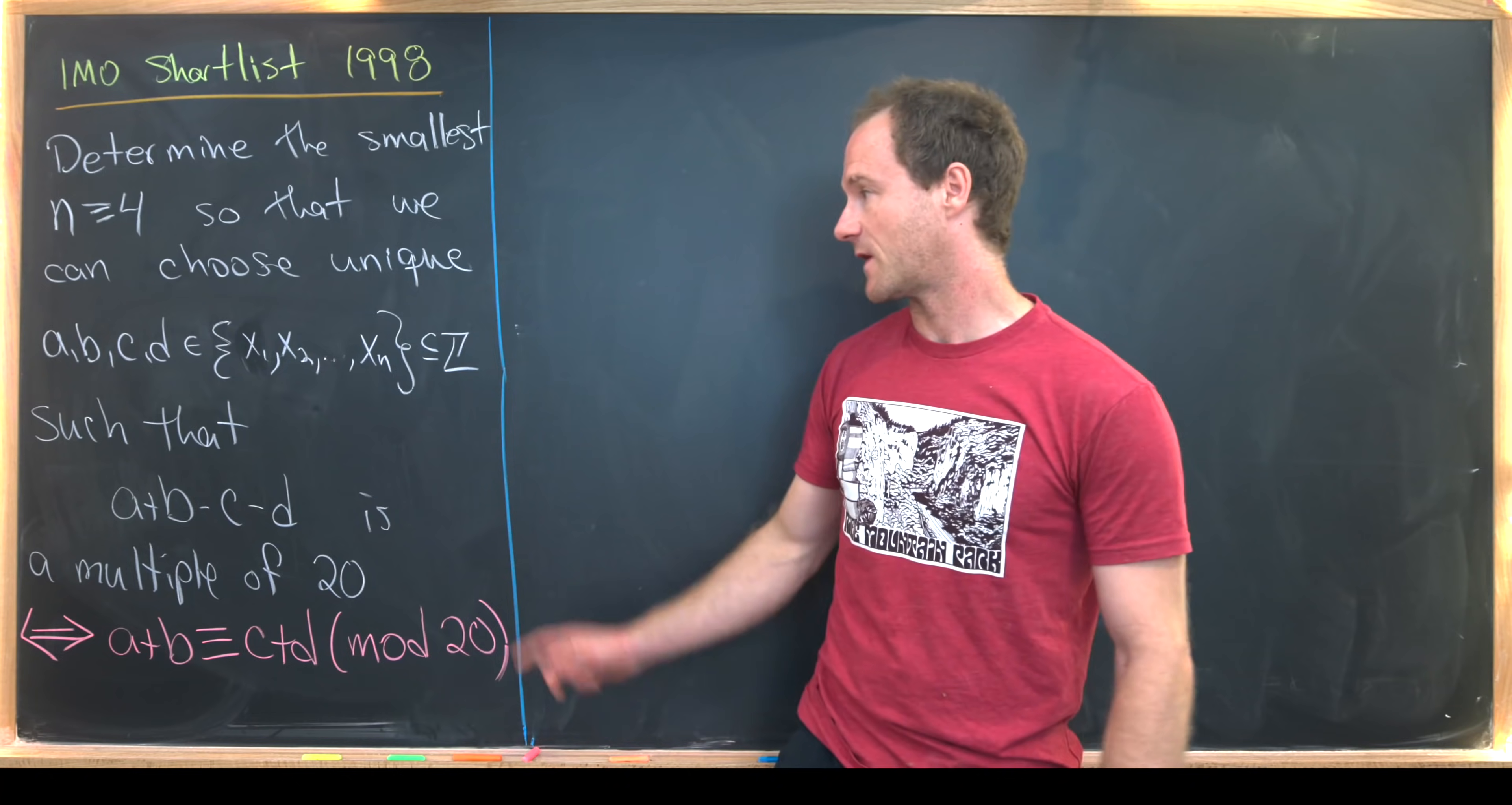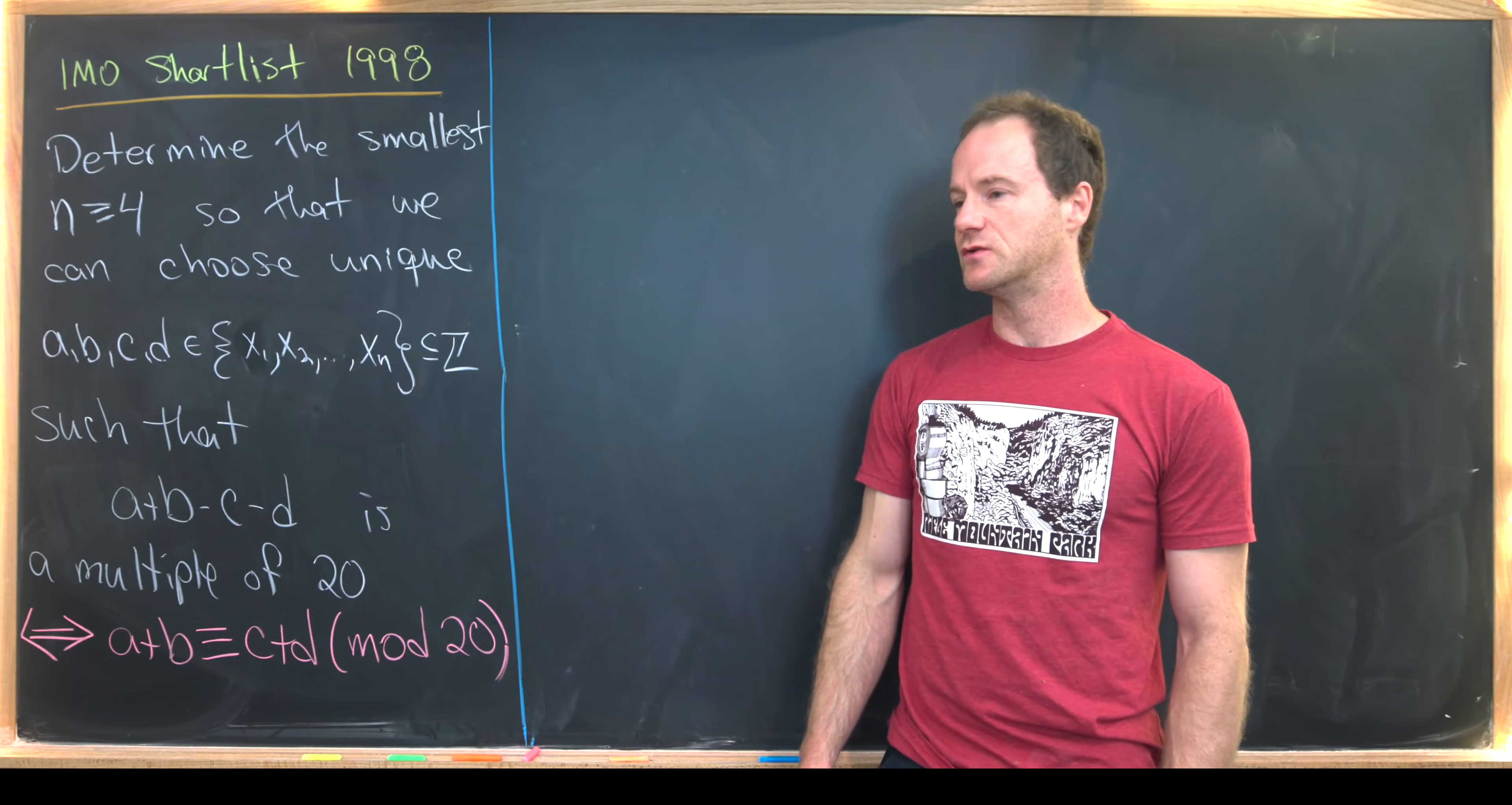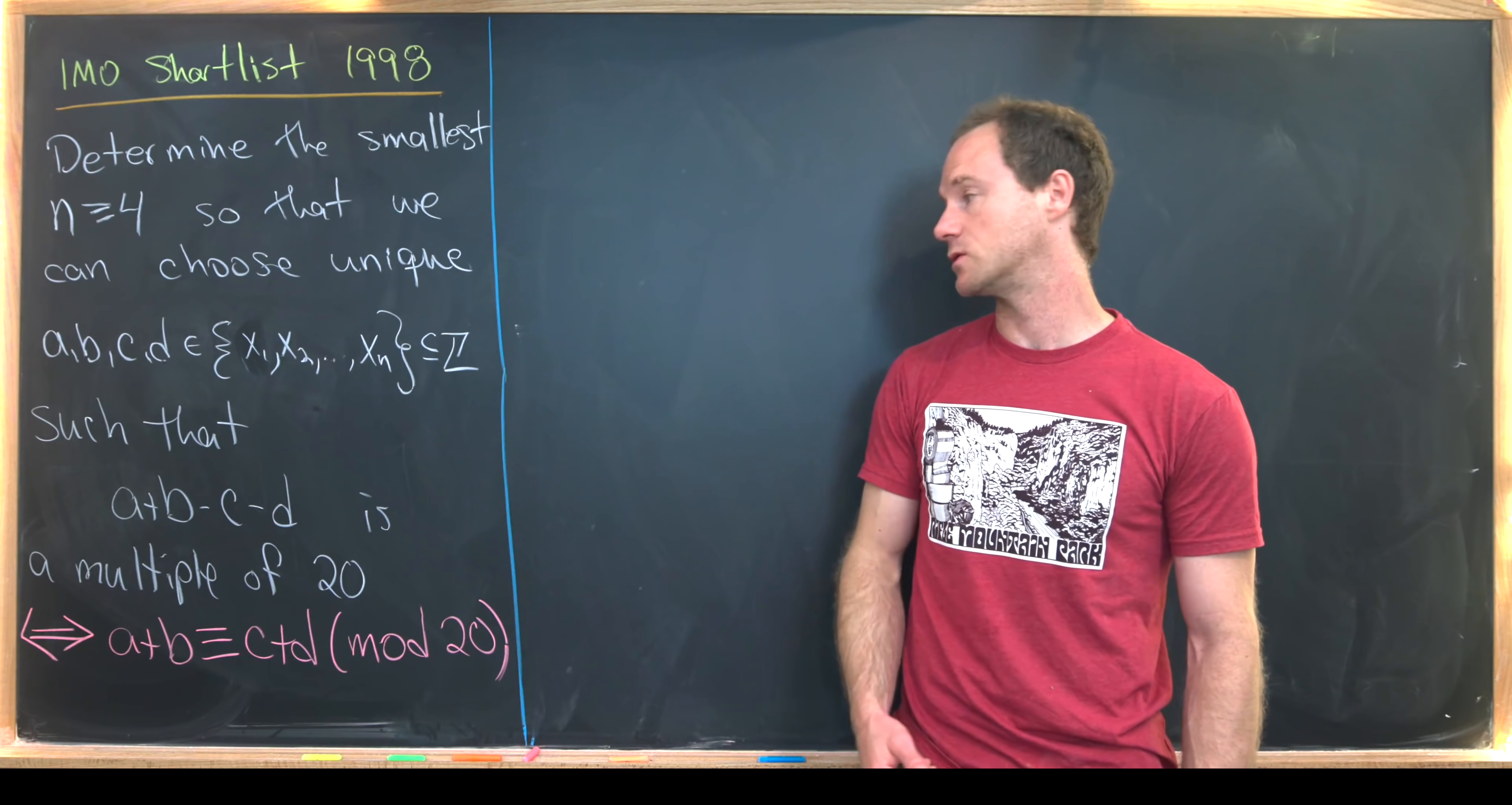But then they have to satisfy, or the numbers that we choose from that set must satisfy a plus b minus c minus d is a multiple of 20. But we're actually going to use the equivalent statement to this being a multiple of 20 using modular arithmetic, and that is a plus b is congruent to c plus d modulo 20.